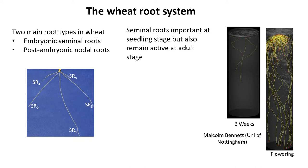Wheat comprises embryonic seminal roots and post-embryonic nodal roots. The embryonic seminal roots include the primary seminal root and two pairs of seminal roots: SR1 and SR2 as the first pair, and SR4 and SR5 as the second pair. Seminal roots develop immediately after germination and can develop much longer. This is a six-week-old wheat plant imaged using X-ray CT — you can see seminal roots here. Even at flowering, the longer deeper roots are the seminal roots, while the shallower roots are the nodal roots. This picture was kindly provided by Malcolm Bennett.